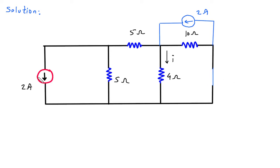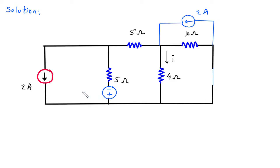Now we will convert this current source into its equivalent voltage source. The direction of that voltage source will be like this — this will be positive and this will be negative polarity. Voltage is equal to current into resistance. Current is 2 ampere and resistance is 5 ohm, so this will be 2 into 5 ohm is 10 volt.